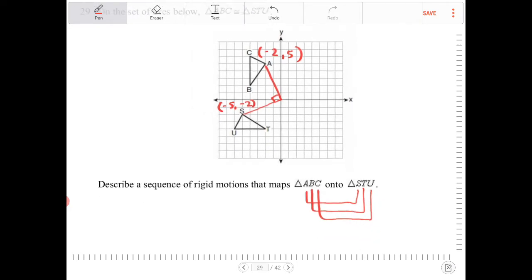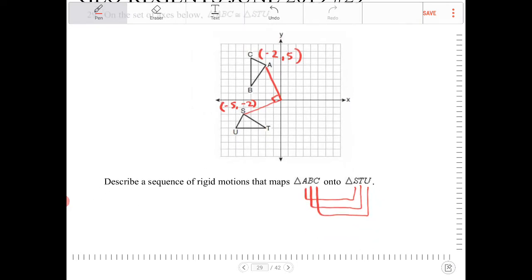The slopes are indeed negative reciprocals. If you look at A to the origin versus S to the origin, the slopes are negative reciprocals.